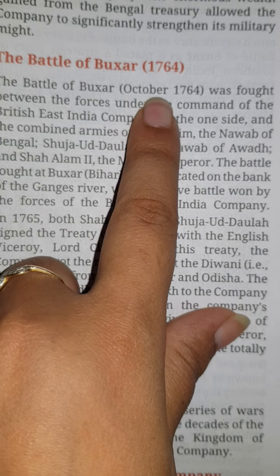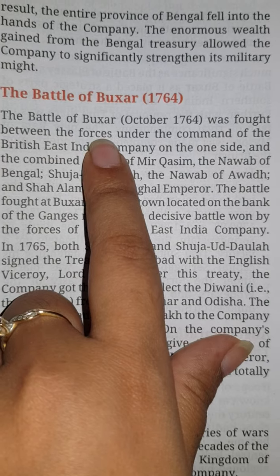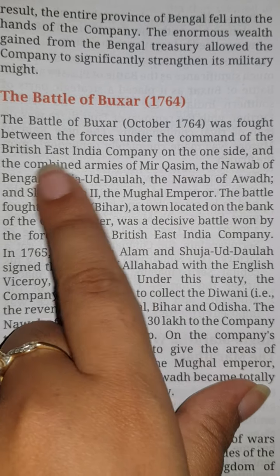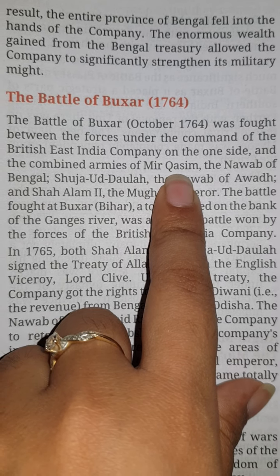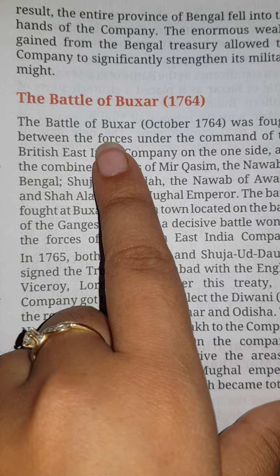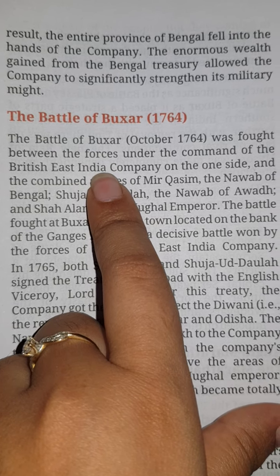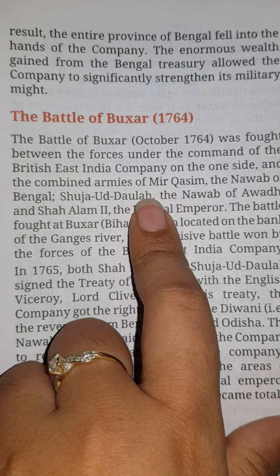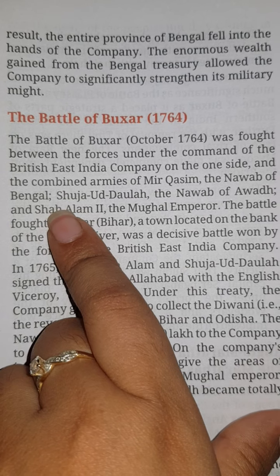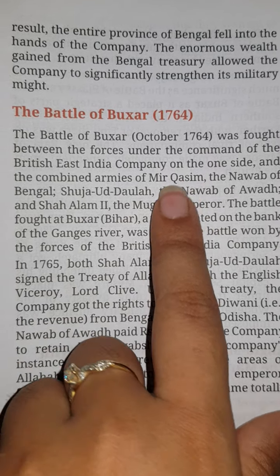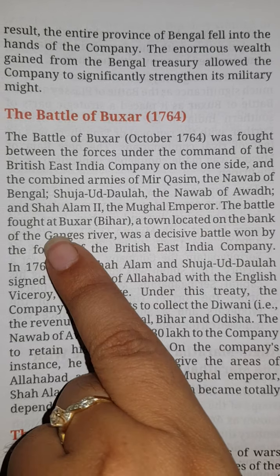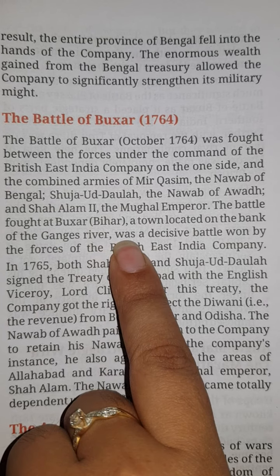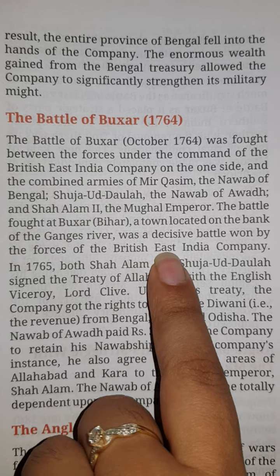The Battle of Buxar, October 1764, was fought between the forces under the command of the British East India Company on one side and the combined armies of Mir Qasim, the Nawab of Bengal. The battle was fought at Buxar, Bihar, a town located on the bank of the Ganga river, and was a decisive battle won by the forces of the British East India Company.